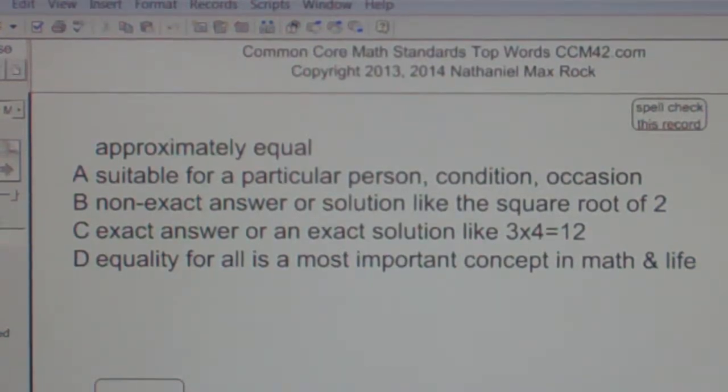Well, the best answer choice in this case from what we've been given for approximately equal is B as in boy: non-exact answer or solution like the square root of 2.